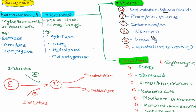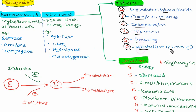In the GPCRS mnemonic: G stands for griseofulvin or glucocorticoids, P stands for phenytoin or phenobarbitone, C stands for carbamazepine, R stands for rifampicin, and S stands for smoking or chronic alcoholism. Remember at least one example from each letter — these are very important for theory exams and MCQs.